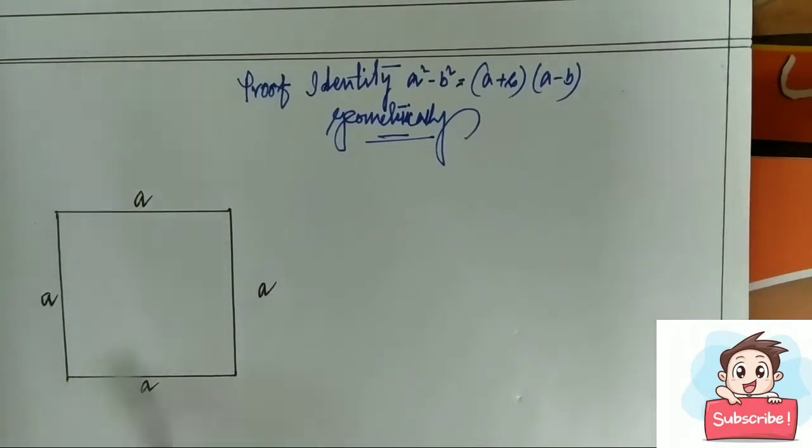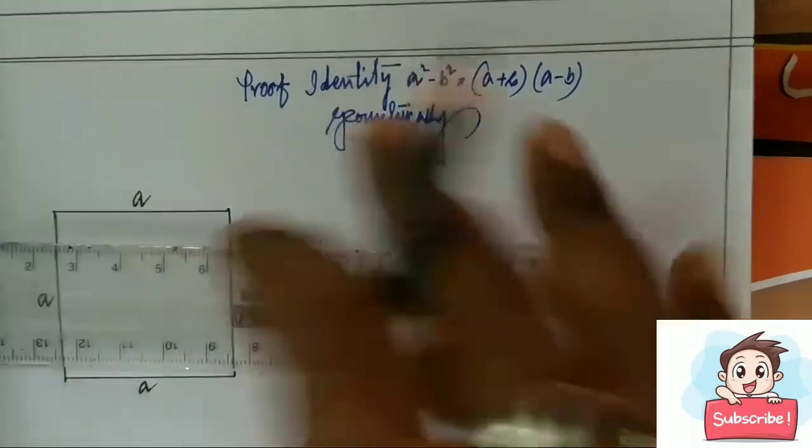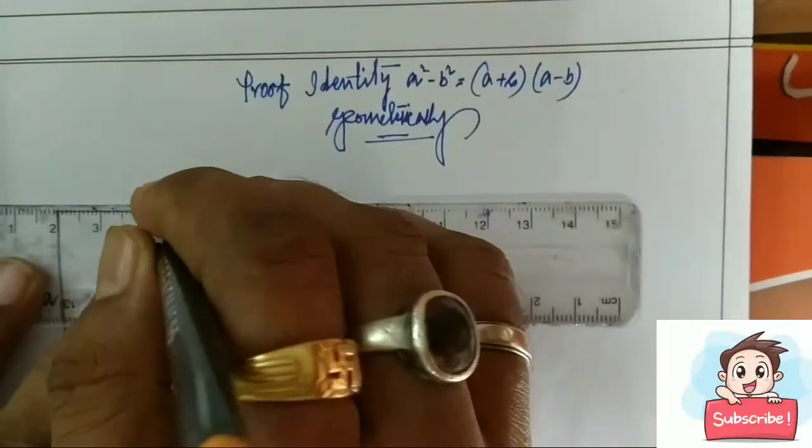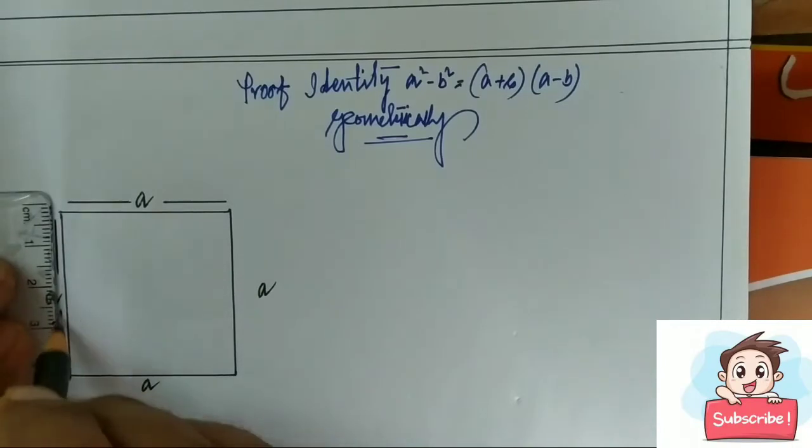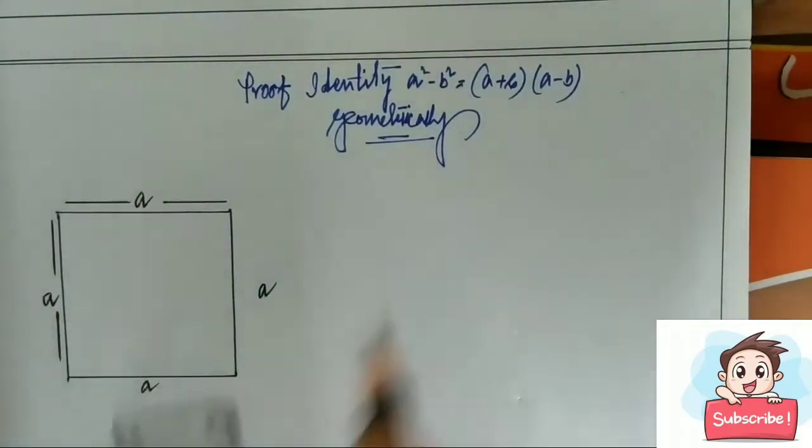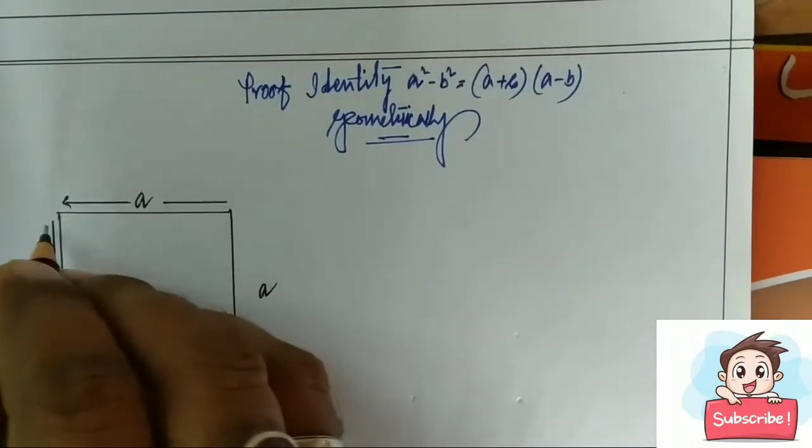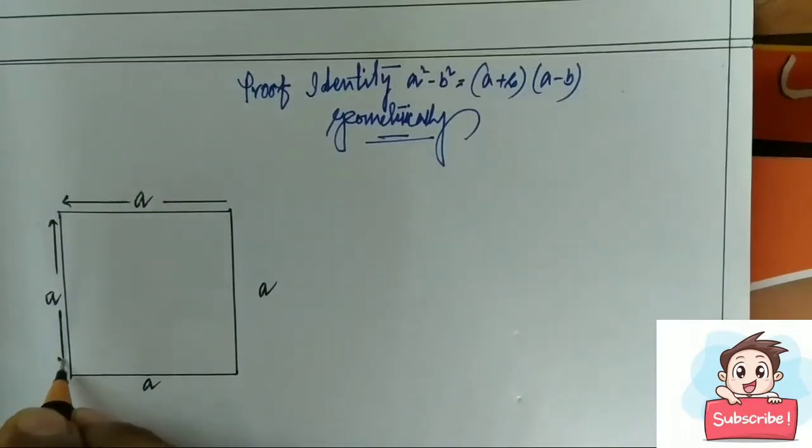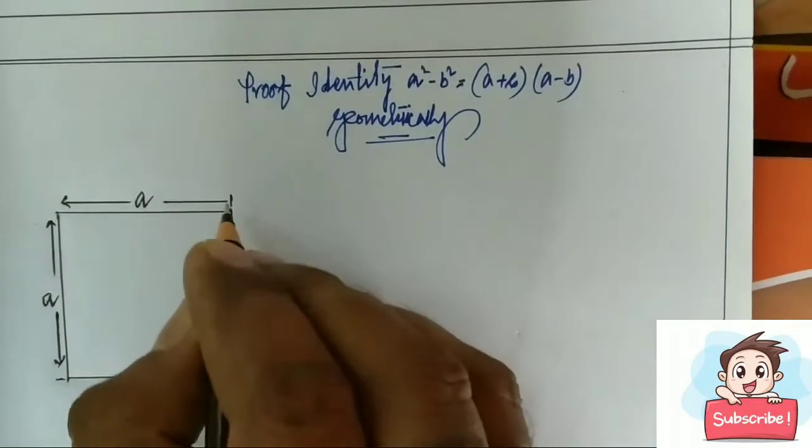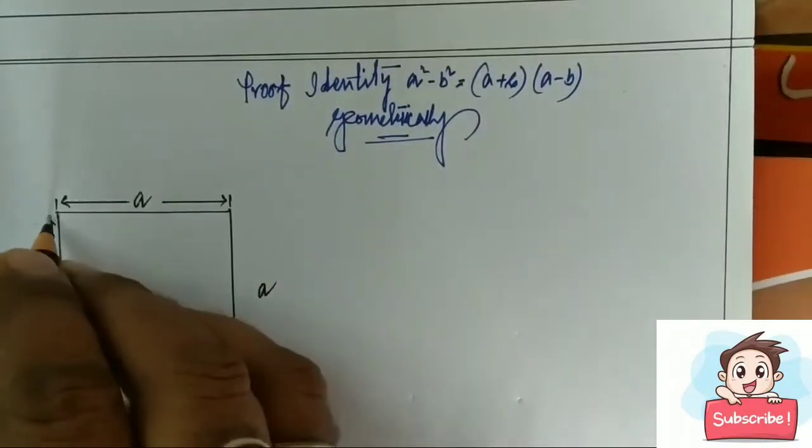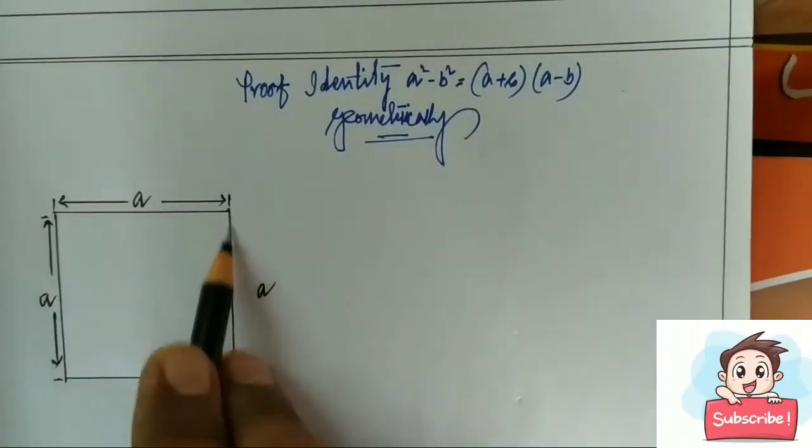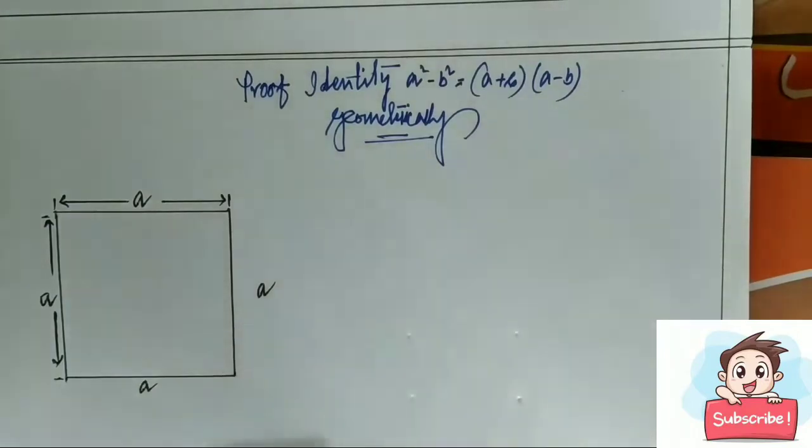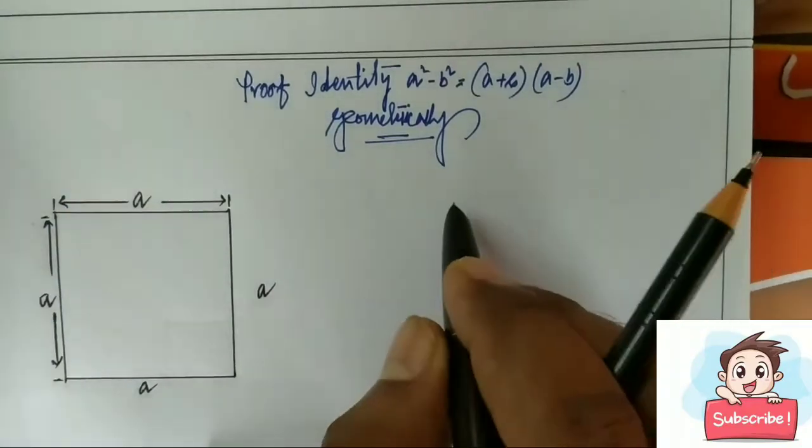Each side is a unit. So area of this square is a square.